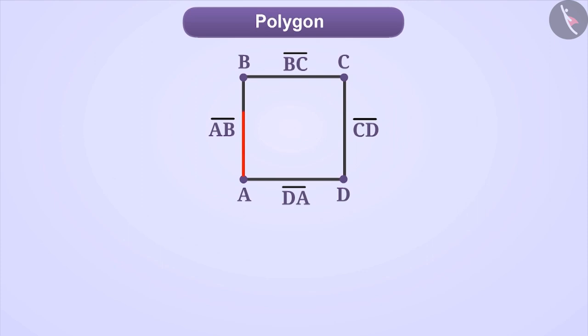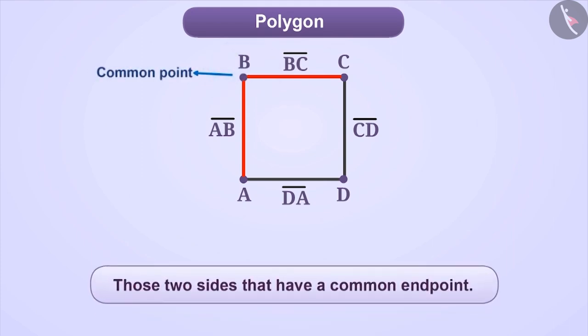Now, let's talk about side AB and side BC. Both these sides are meeting at one point only. This means, for side AB and side BC, point B is the common point. Any two sides having a common end point is known as adjacent sides of a polygon.